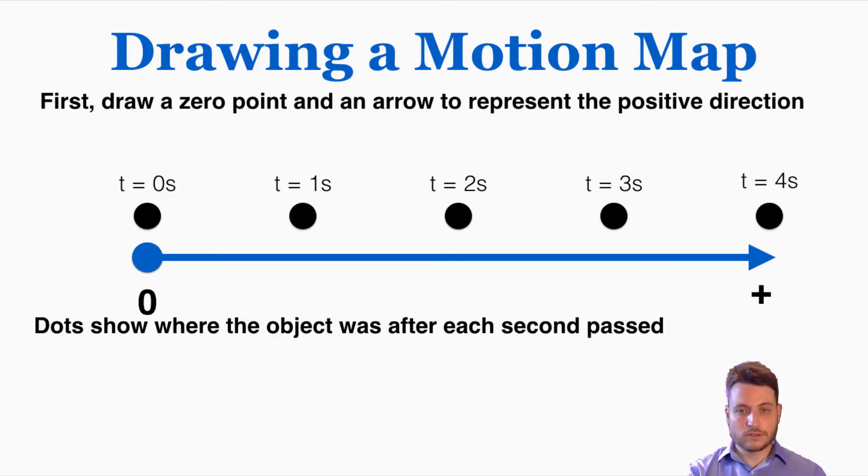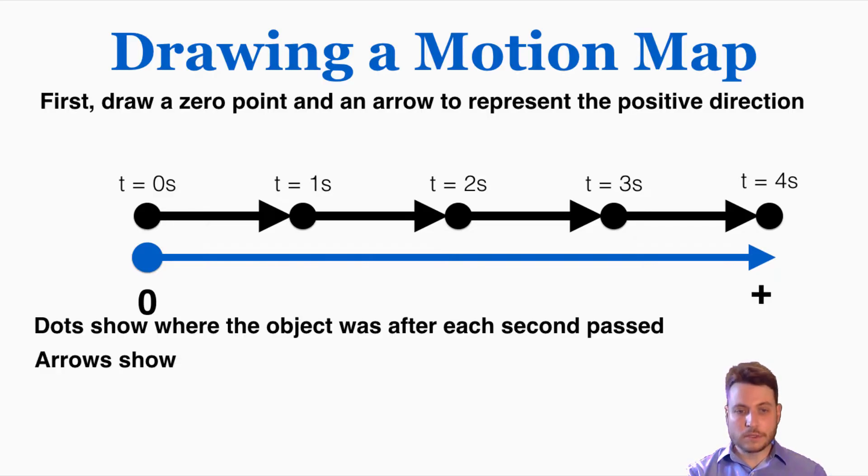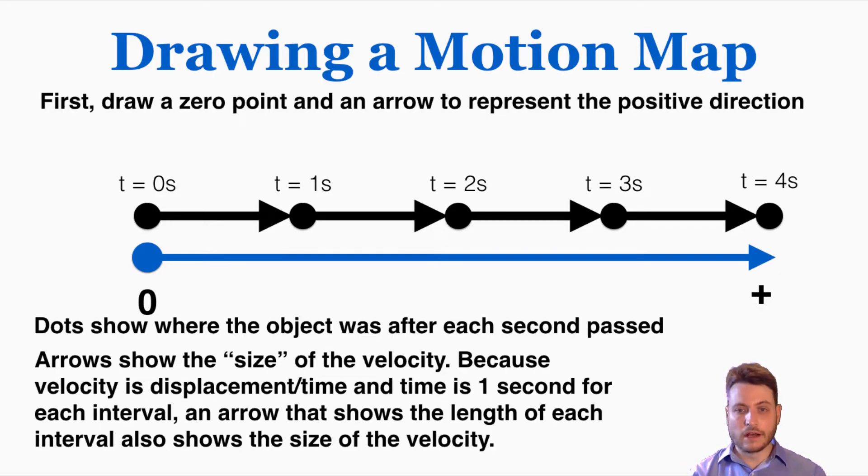The next thing to do is draw arrows connecting each dot from where the object started to where it stopped. The reason why we draw these arrows is because the arrows show the size of the velocity. Because velocity is displacement divided by time, and time is just one second for each dot, an arrow that shows the length of each interval also shows the size of the velocity. So if there's a larger distance between two dots, that means that in that one second you are going faster because the same amount of time passed, but you crossed a larger distance. So the arrows are a useful way of representing how fast you are going on the motion map.